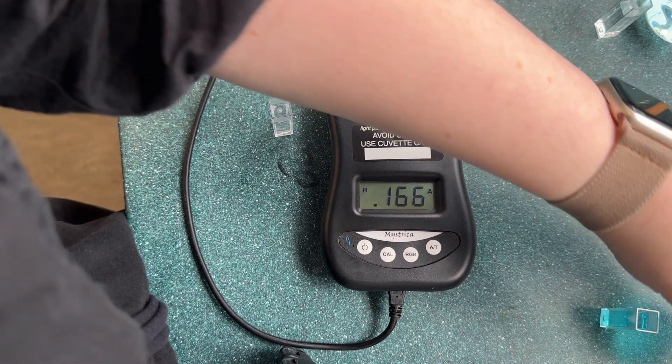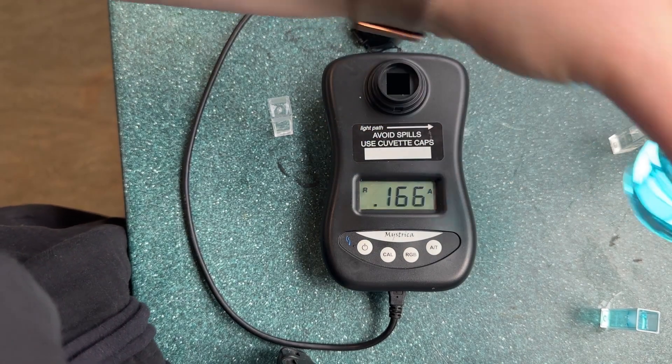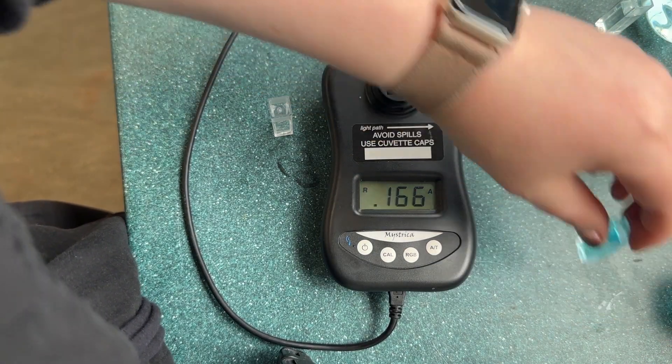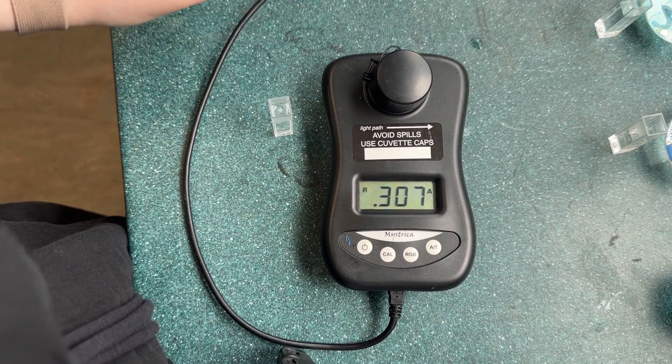We're now going to take a solution which has been diluted by an unknown amount. We put this into the colorimeter and take the reading.